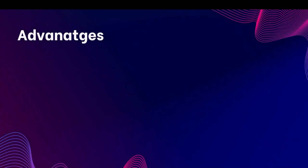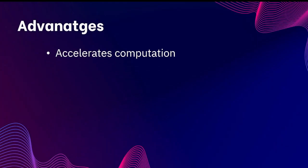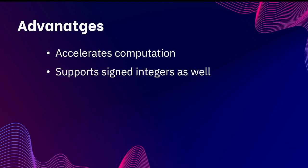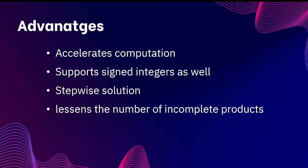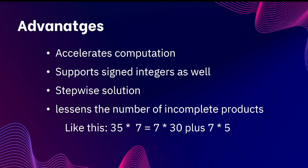Now the advantages of Booth's algorithm. First, it accelerates computation — the algorithm is faster and works on string bits requiring no additional bits, only right shifts. Second, it supports signed integers. Third, it provides a step-by-step representation of the solution which makes the algorithm easier to understand. Fourth, it lessens the number of partial products, reducing steps and time — for example, 35 times 7 can be decomposed without extra steps, making Booth's algorithm faster and more efficient.